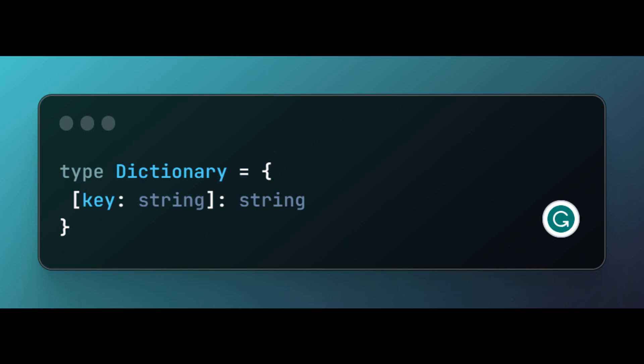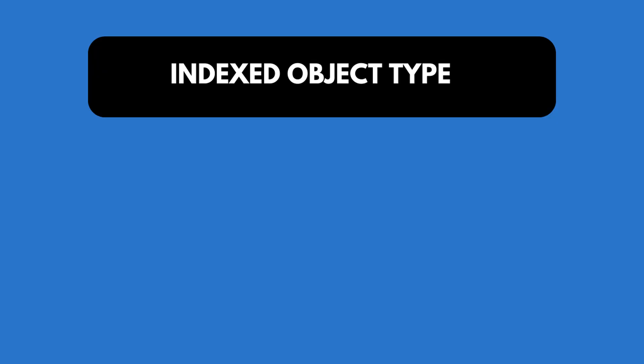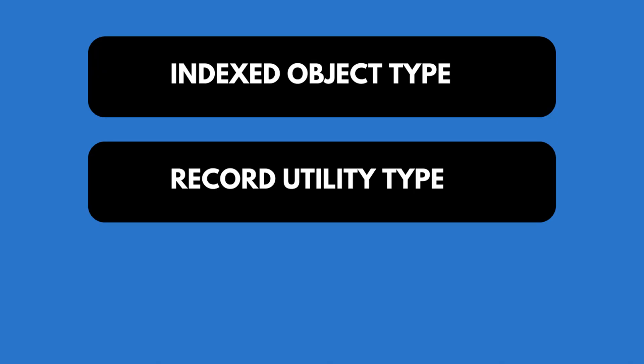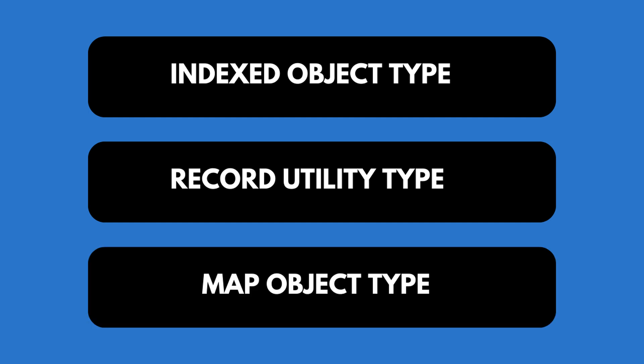We are going to look at how we can create a typesafe dictionary using the indexed object type, and last but not least, using the map object. So let's dive into what we have for today.